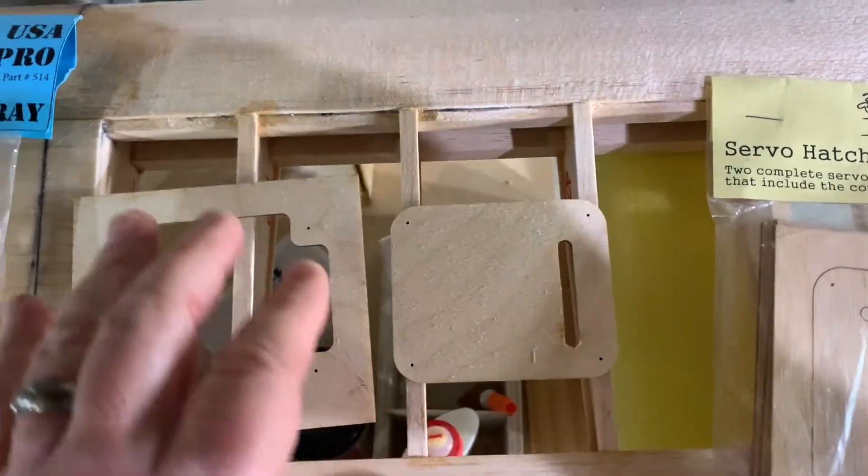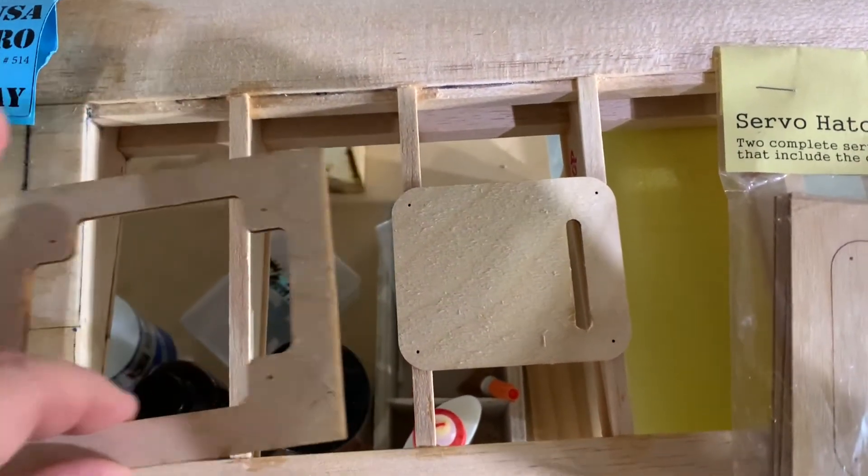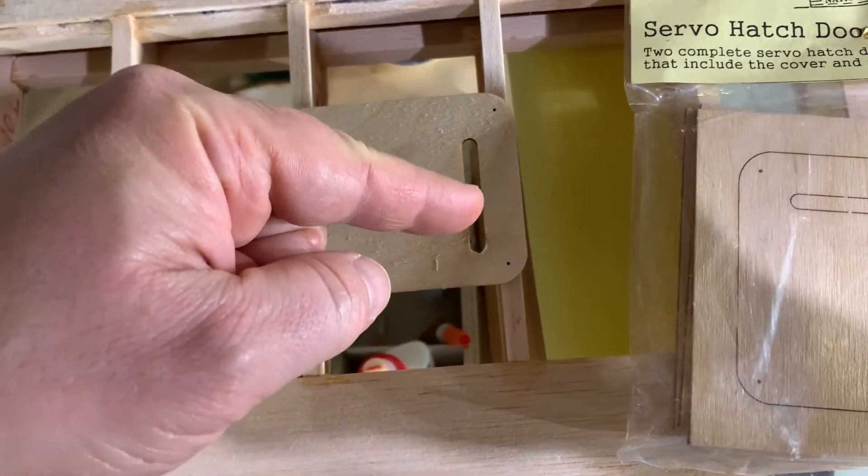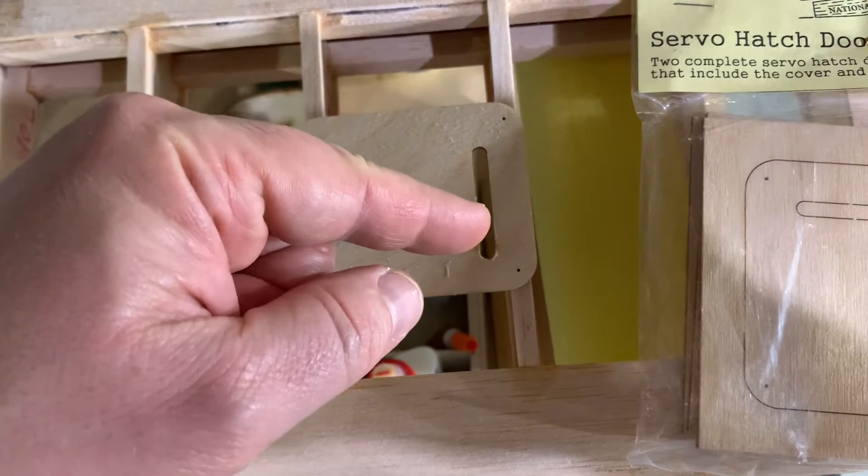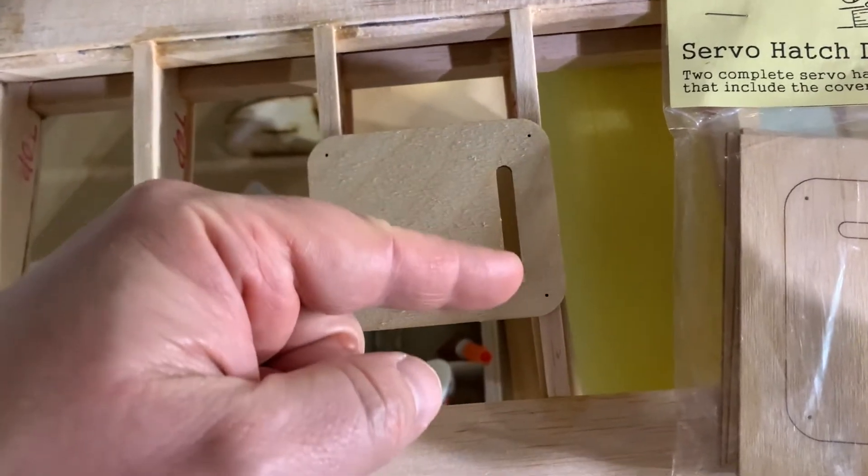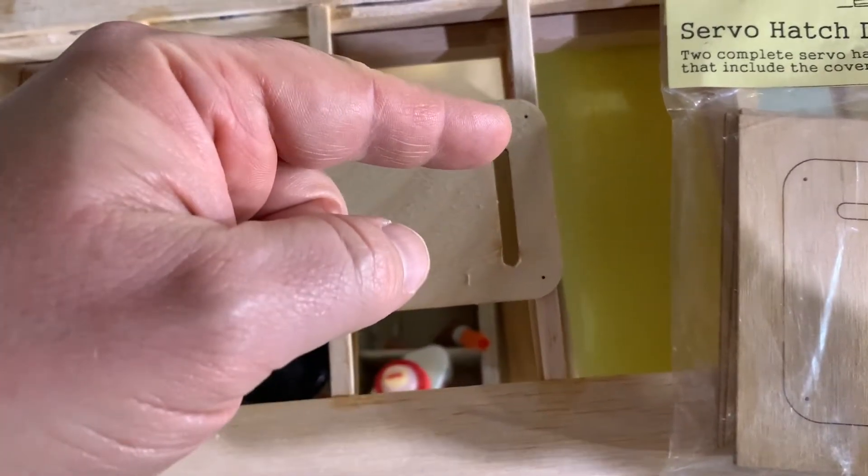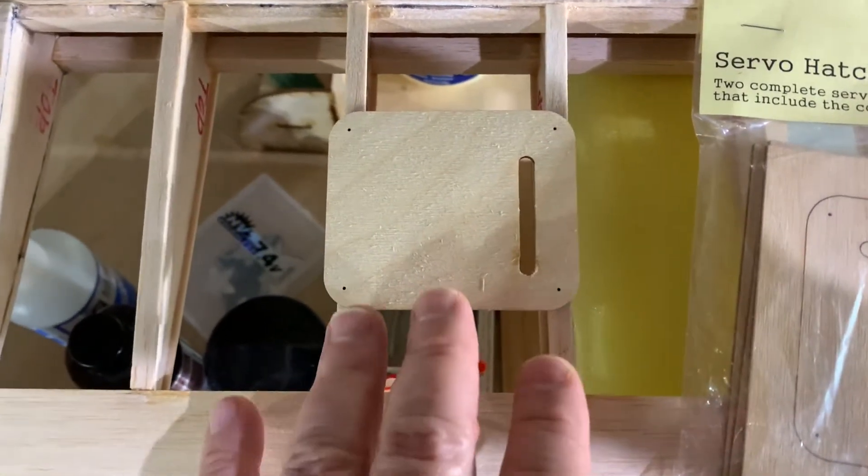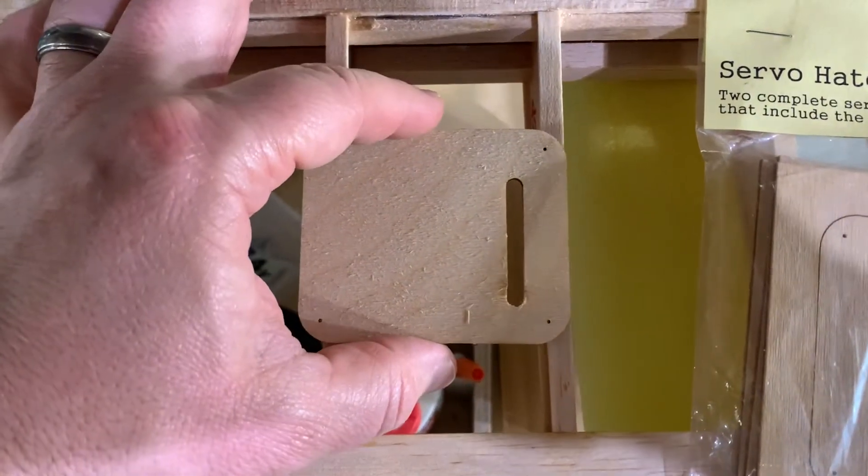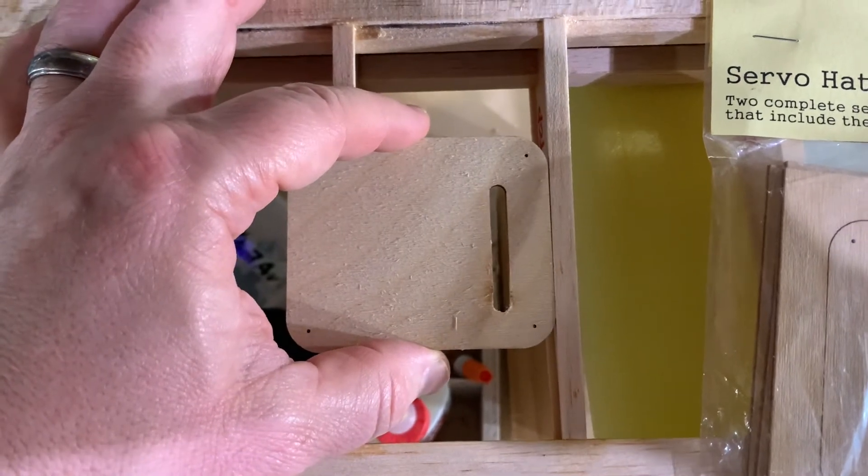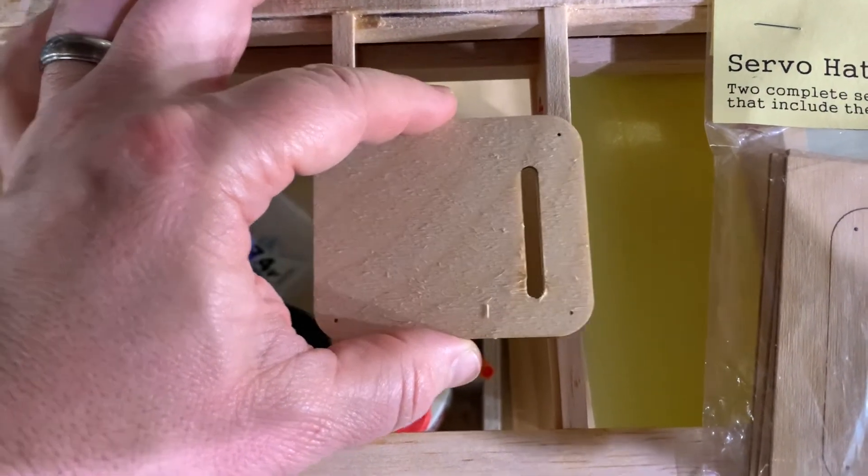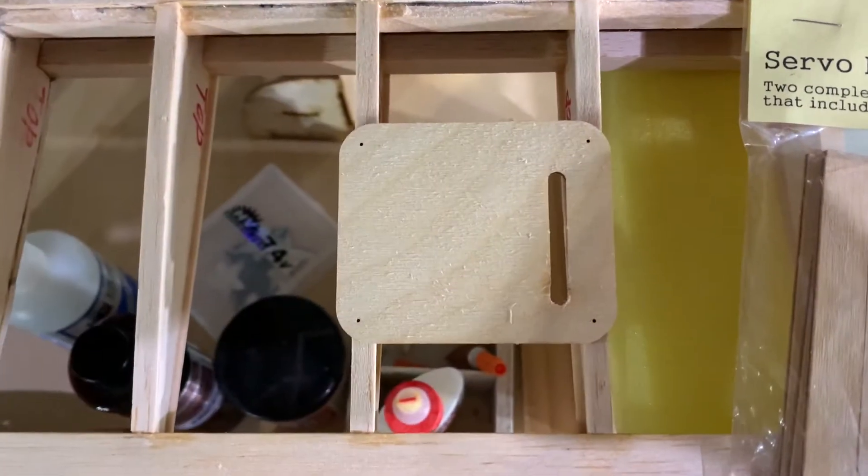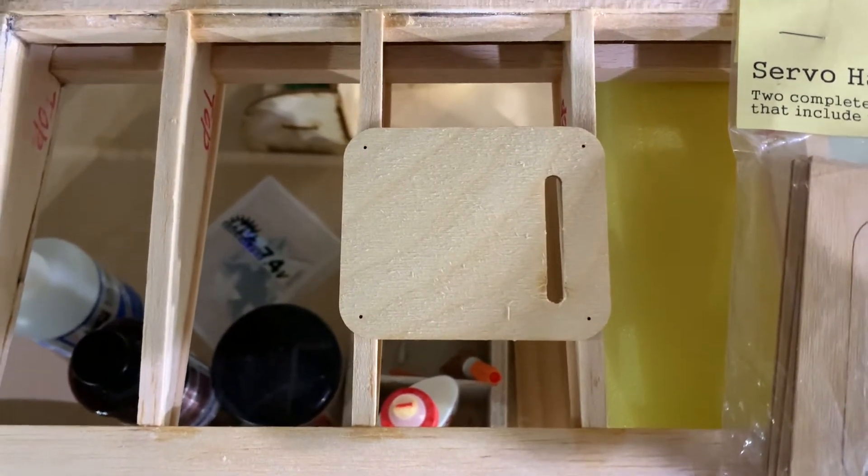Right now we're going to mount it so that the servo is this way. In other words, when you mount your servo, you can mount it so that the arm is on this side or on this side. What I mean by that will make more sense as we go along. But the key thing here is we need to make sure this is sitting flush with the cap strips. So we're going to work this out, figure it out together.